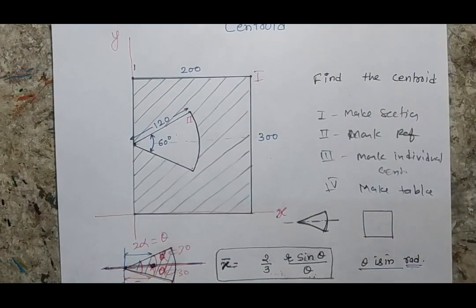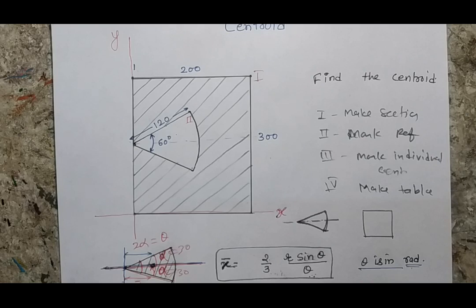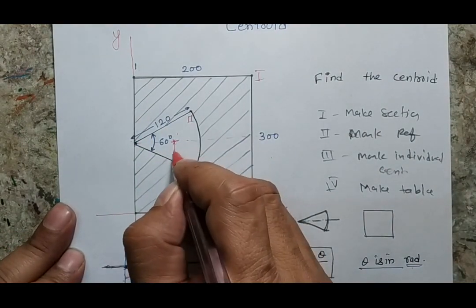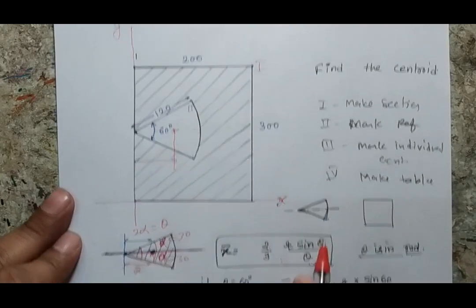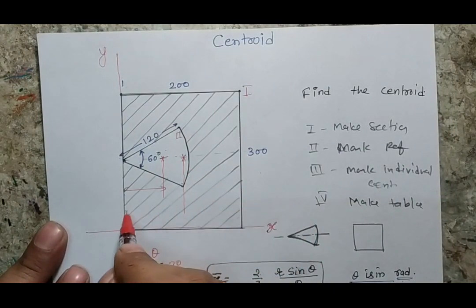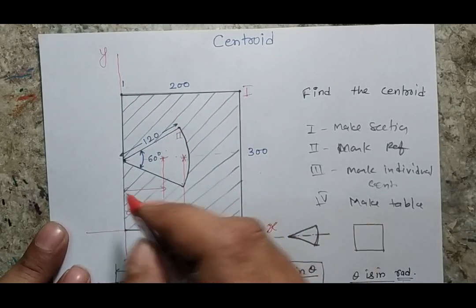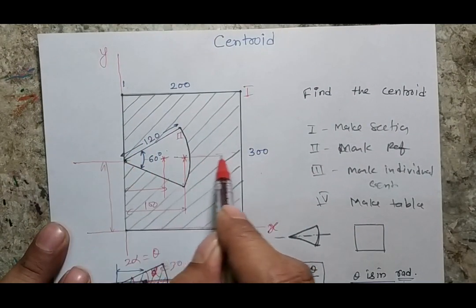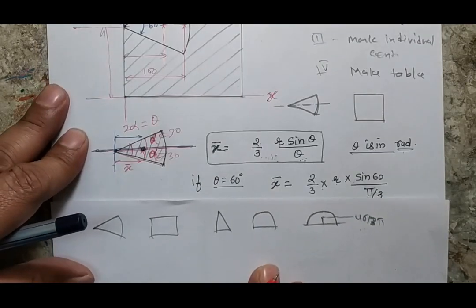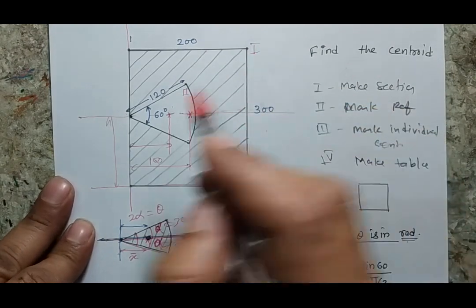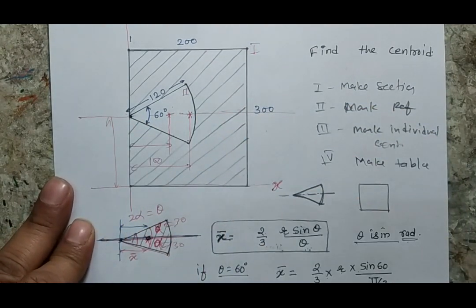My third job is to identify or mark the centroid of each individual section. For the arc section, the centroid position can be calculated using the formula. For the rectangular body, the centroid will be at half of 200, which is 100. This body is symmetric about the horizontal axis, and whenever we have a symmetric section, we do not calculate the centroid for the vertical direction — we only find x-bar, because y-bar will be zero and the centroid lies on the axis of symmetry.